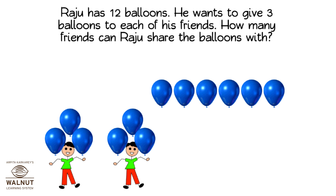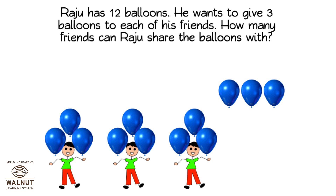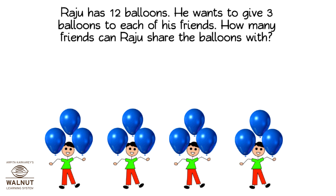Then we take away three more balloons and give them to another child. So it's three children who have balloons. There are no more balloons left. So four children can get the balloons. We shared twelve balloons with four children by giving each child three balloons. That means we can share equally by subtracting again and again.